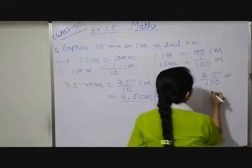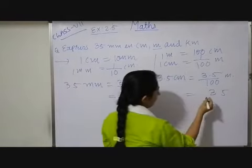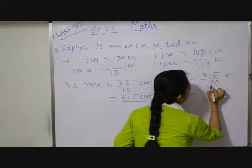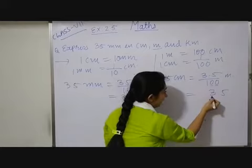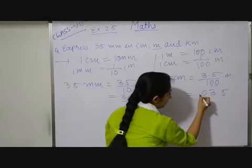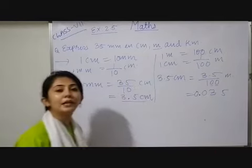Now, 3.5 I will write as it is. After 1, how many zeros? 1 and 2. So, before decimal I have to shift two places. One is this 3 and 0, then a decimal, giving 0.035 meter. Like that you can convert.